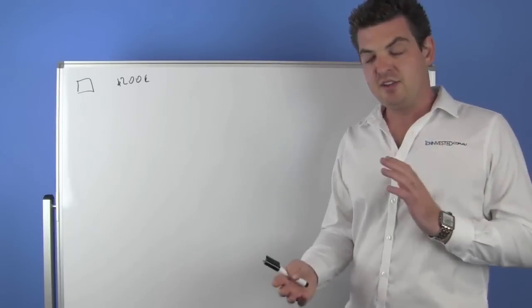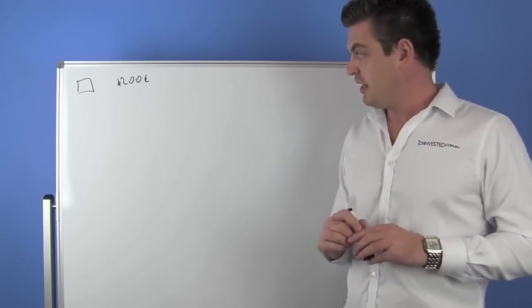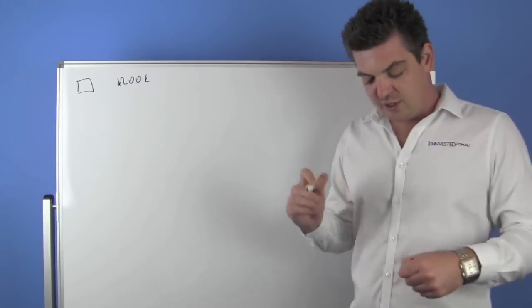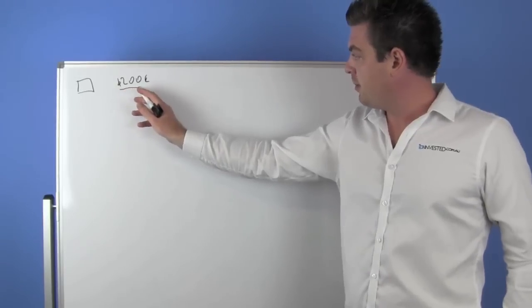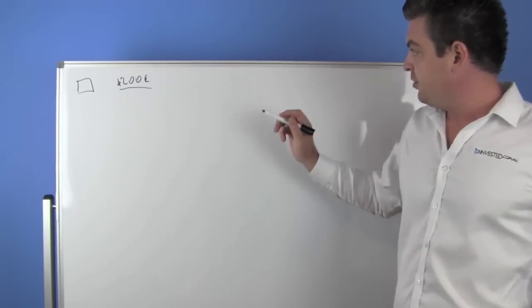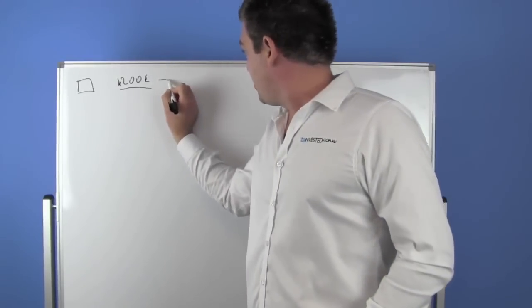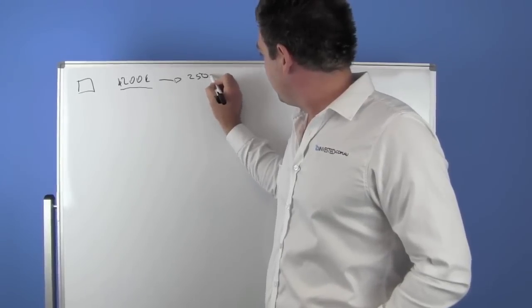Let's say for instance you go and buy a property for $200,000. It could be a property in Sydney, it could be a property in Brisbane, it could be a property wherever. Let's assume that that property is a below market value property and it's worth $250,000.